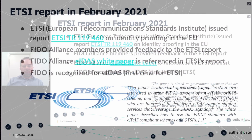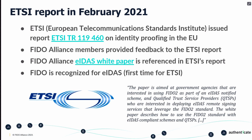The result: in February 2021, ETSI issued technical report 119460 on remote identity proofing in the EU. We provided feedback to that ETSI report both as the FIDO Alliance itself and also through a couple of member companies. The FIDO Alliance eIDAS whitepaper is now referenced in the ETSI report, which means FIDO has become recognized for eIDAS — actually the first time that has happened for ETSI. They now recognize FIDO to be used for EAL level high.